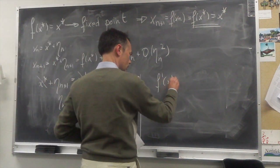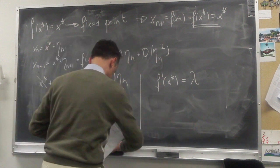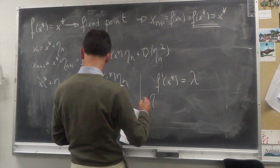f prime of x star is a number we call lambda. Because of this, we can write eta sub n plus 1 in terms of eta original, eta naught.